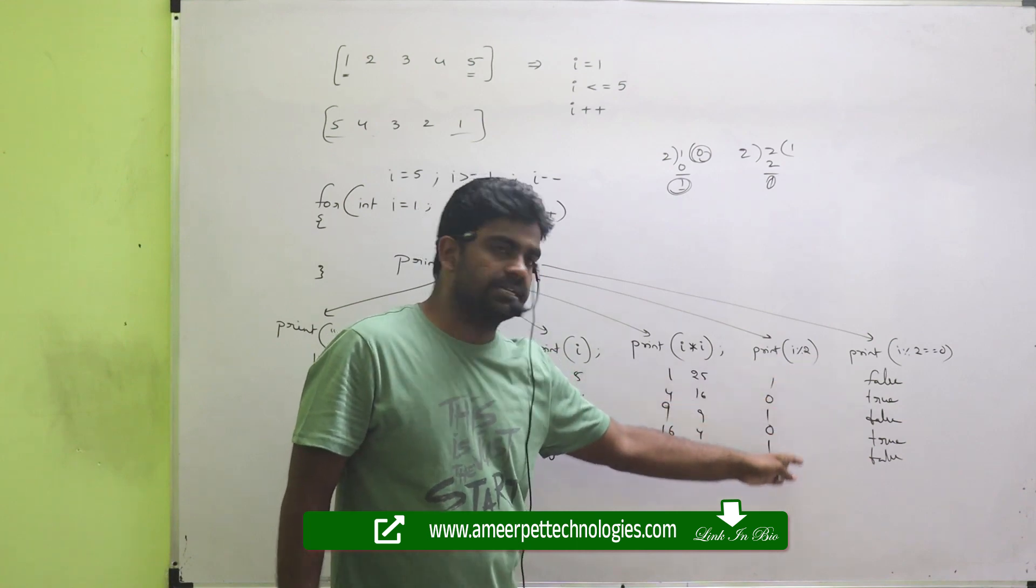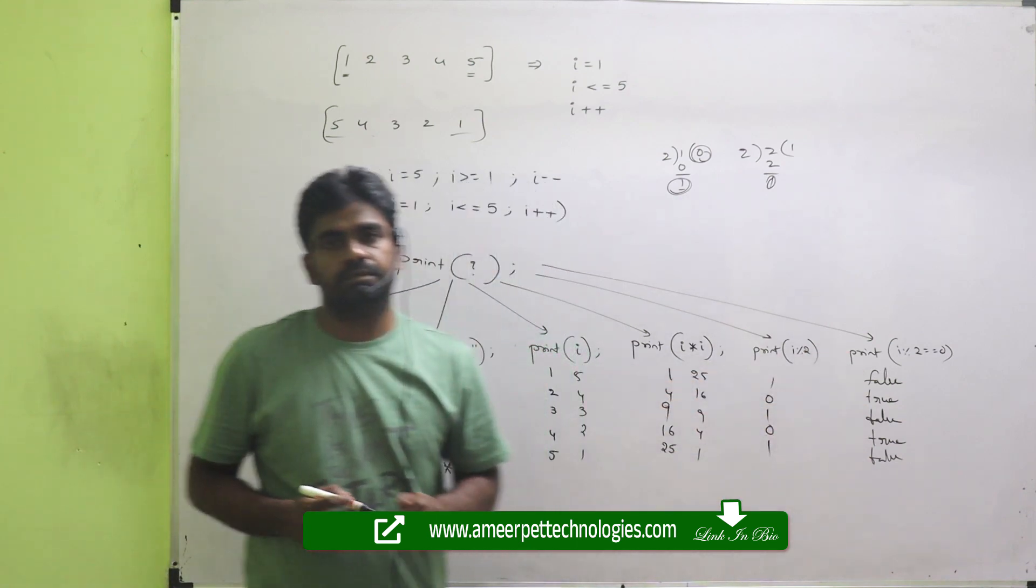Then 5 mod 2 is 1, 0, 1, 0, 1. Is false, true, false, true, false.